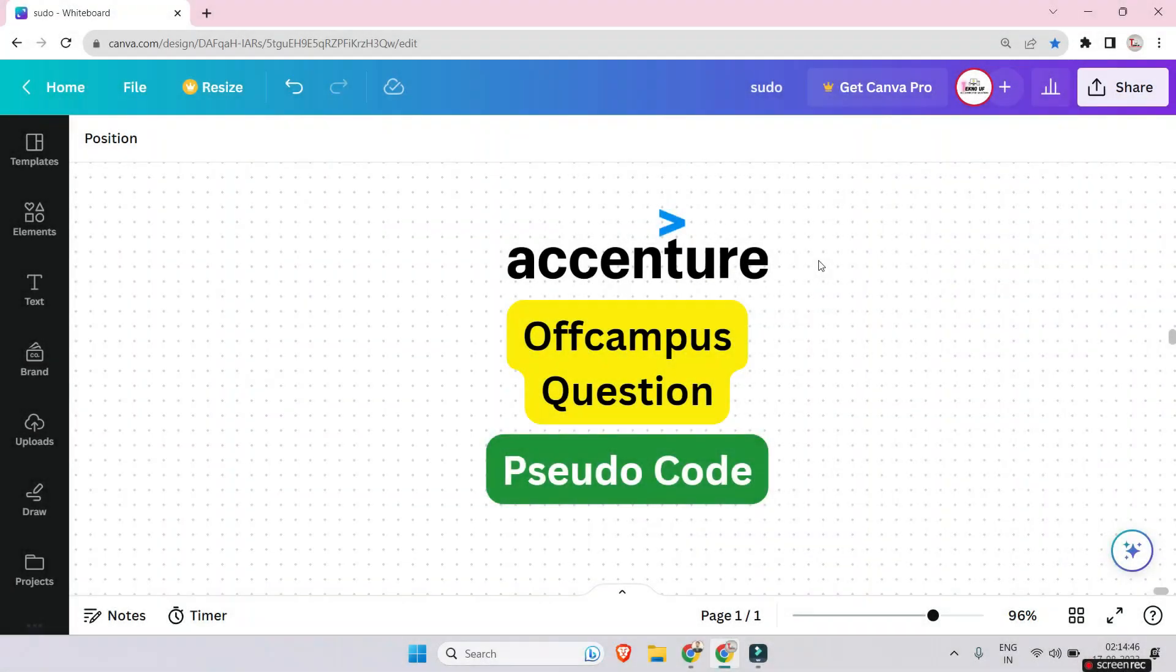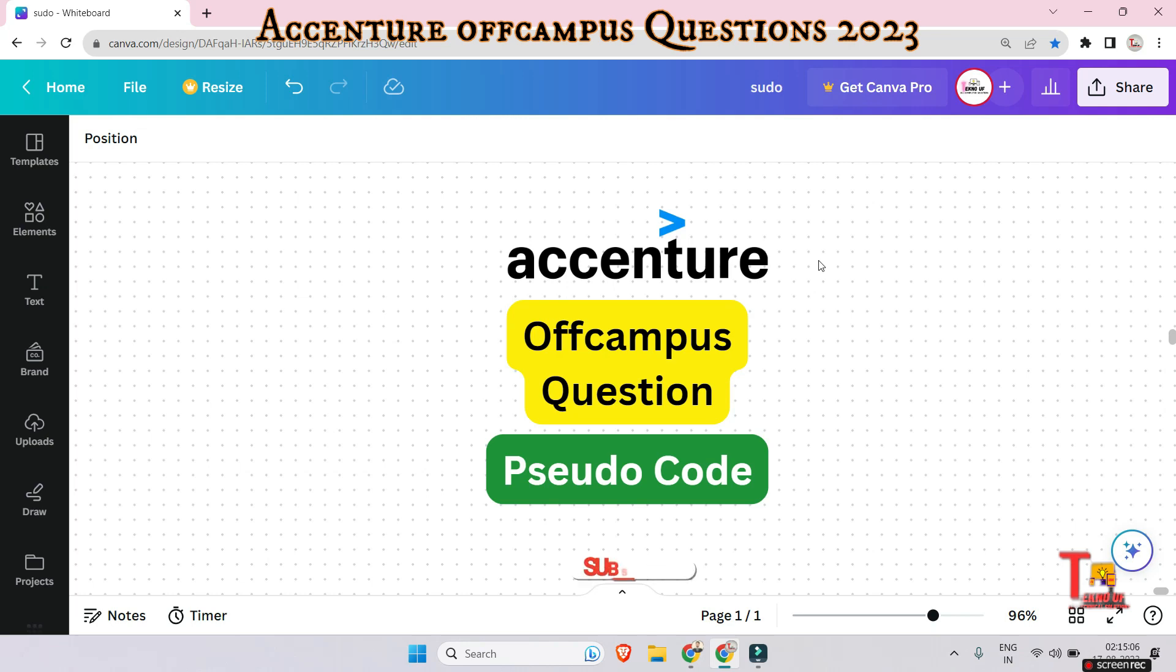Hello my family members, you might have noticed that in some Accenture on-campus or off-campus exams, pseudocodes are not coming. Instead of pseudocode, they are asking about programming logic. But it is not necessary to skip pseudocode from your mind because chances of pseudocode is 80% and 20% for programming logic.